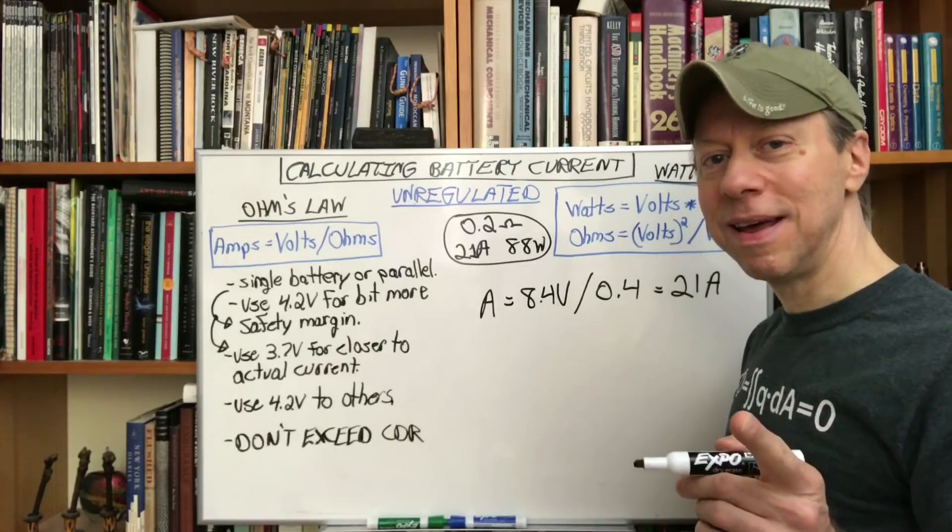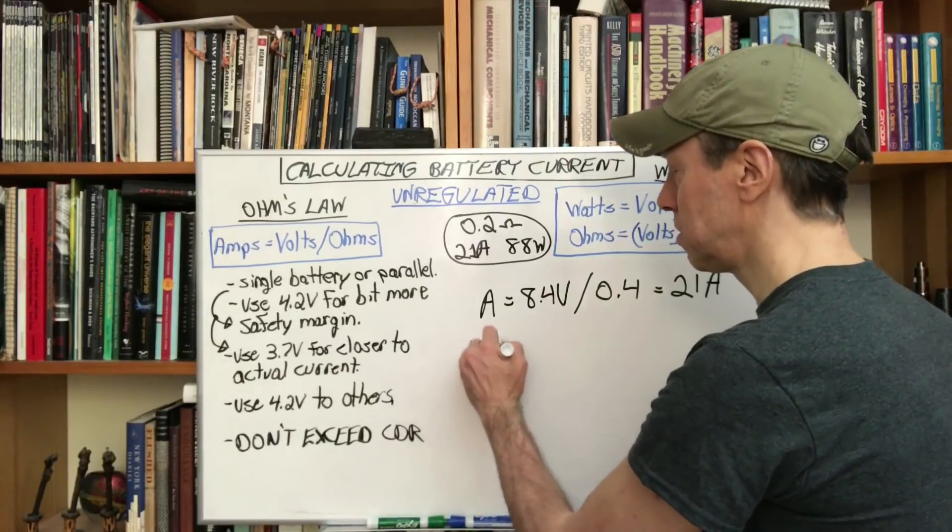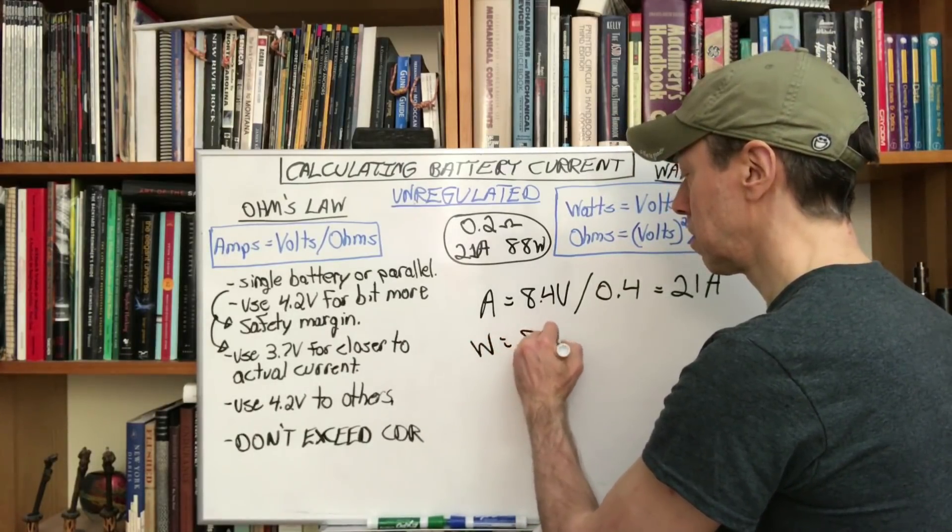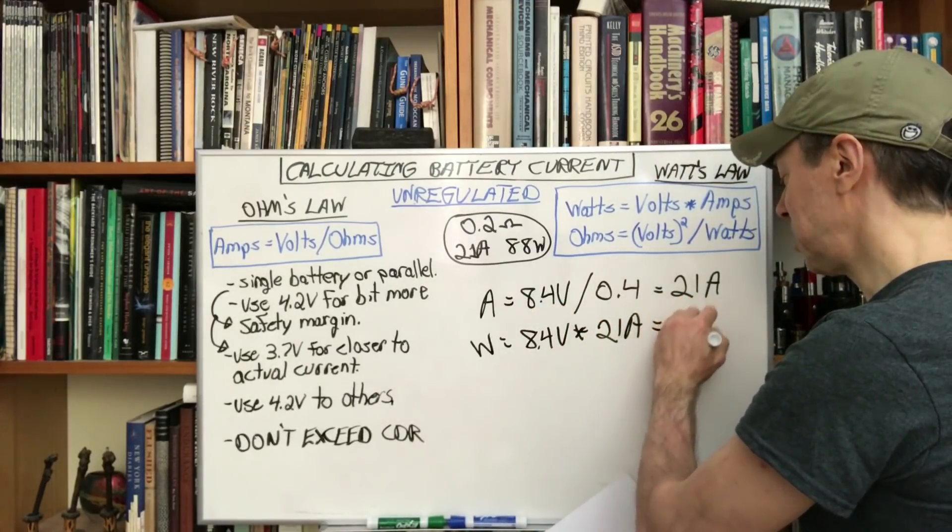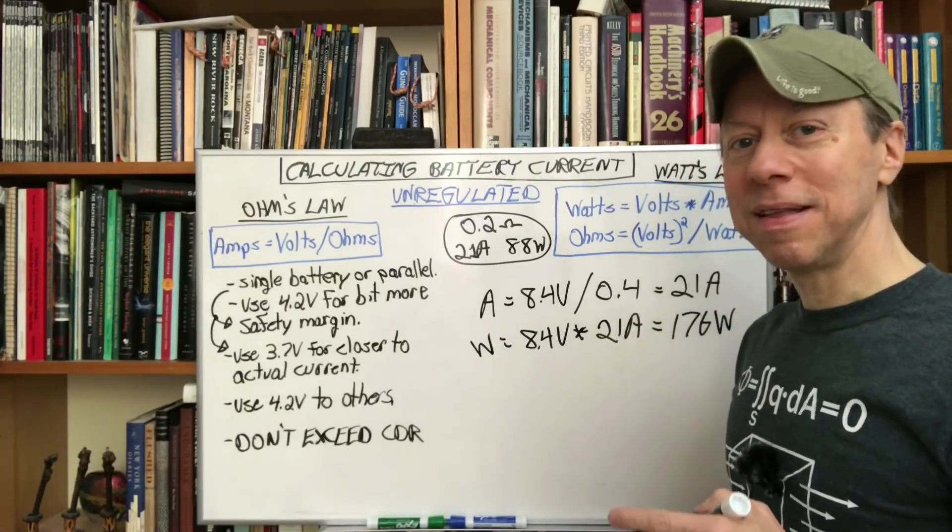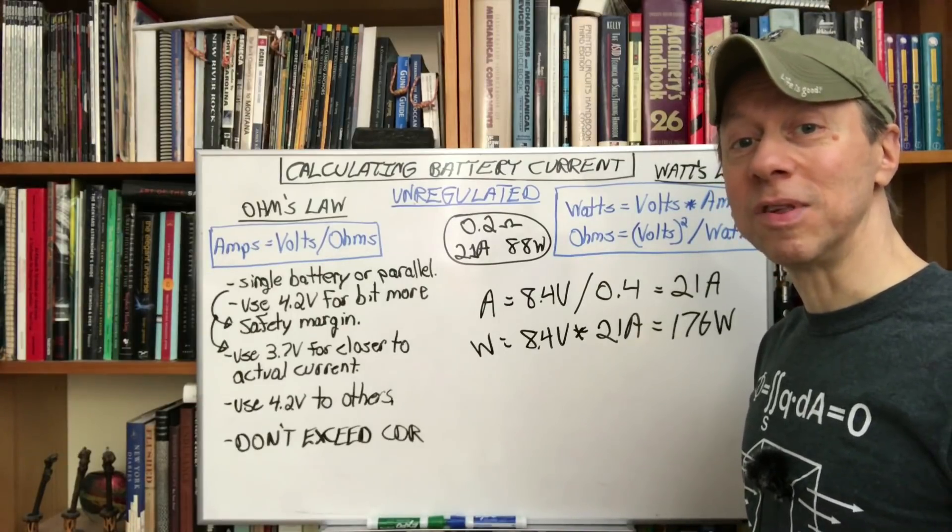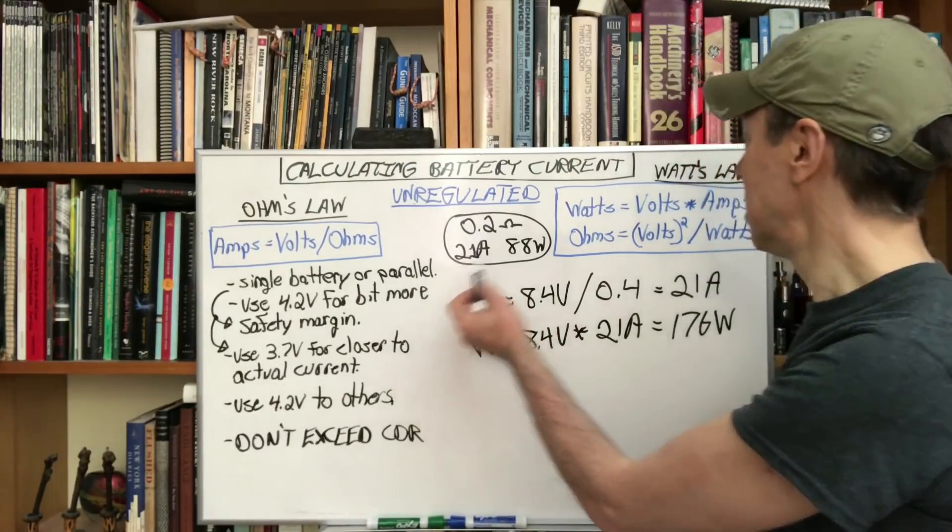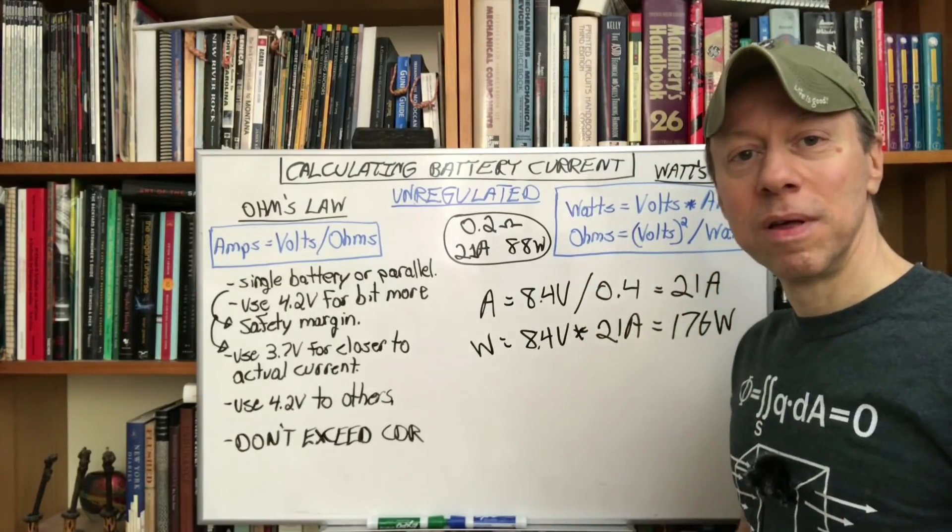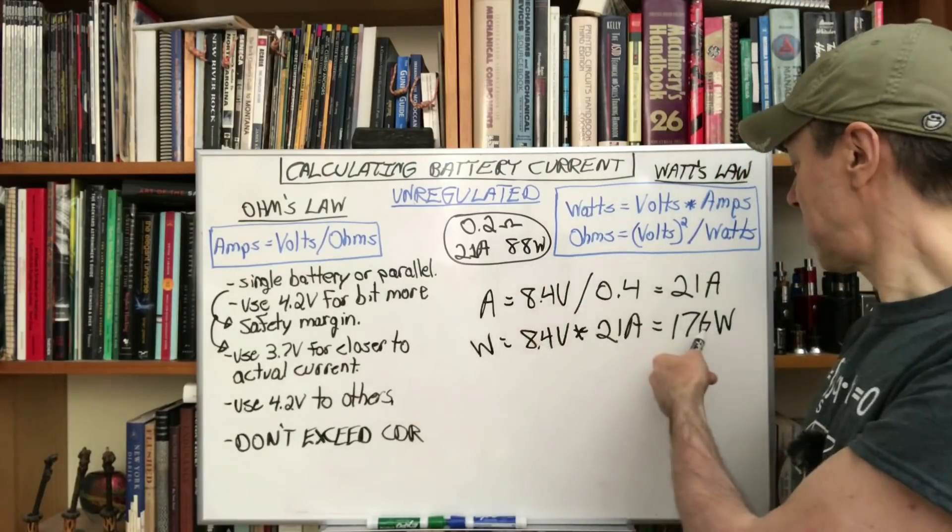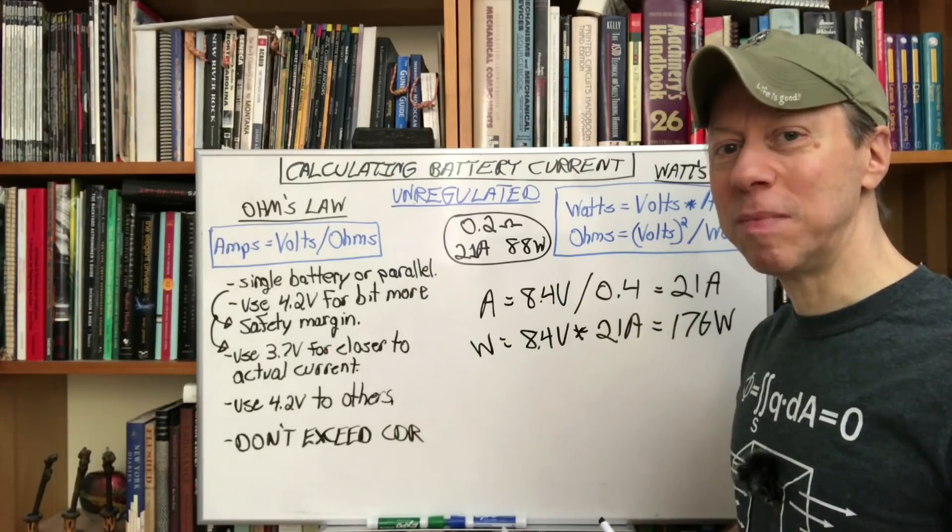But wait a minute what wattage are we running at now? You've compensated and got the same current here but if we run the wattage equation, Watt's law, now we've got 8.4 volts times 21 amps and we're at 176 watts. Doubling the coil resistance may give you the same battery current but it does not give you the same power. Since the battery current's the same but the voltage is doubled that means for a series setup the wattage is going to be doubled.